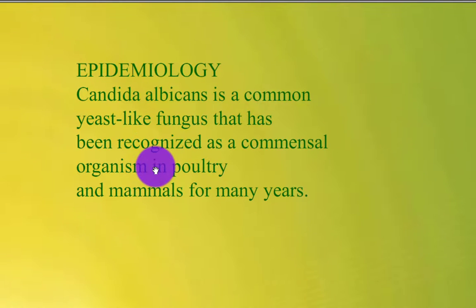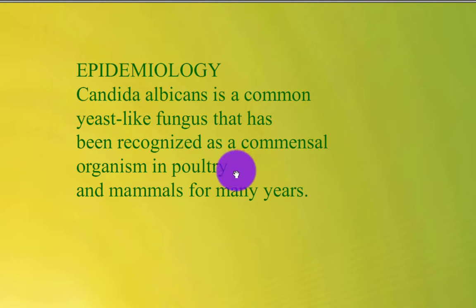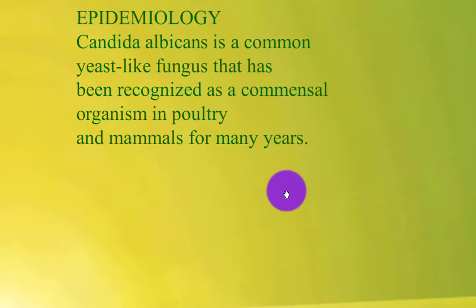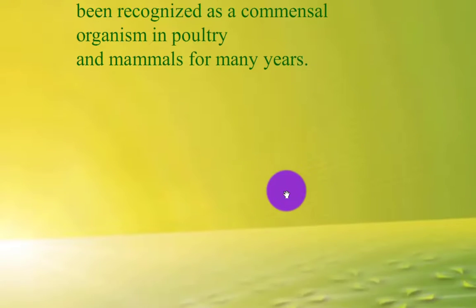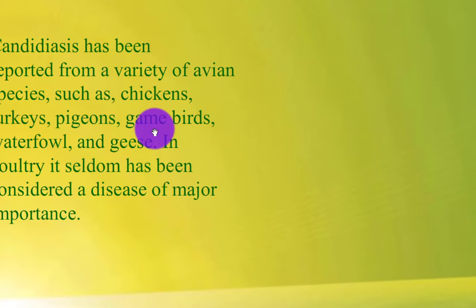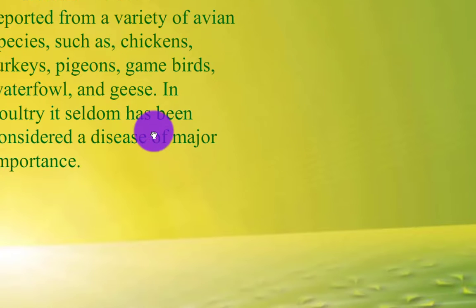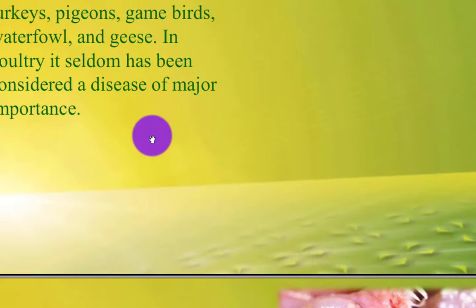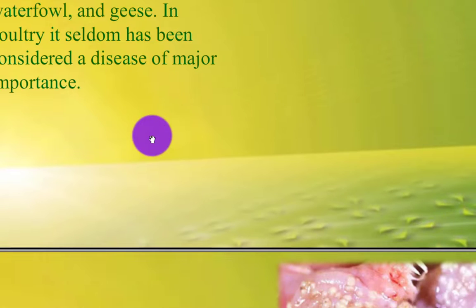Epidemiology: Candida albicans is a common yeast-like fungus that has been recognized as a common cell organism in poultry and mammals for many years. Candidiasis has been reported from a variety of avian species such as chickens, turkey, pigeons, sheep, birds, and waterfowl. In poultry, it has seldom been considered a disease of major importance.